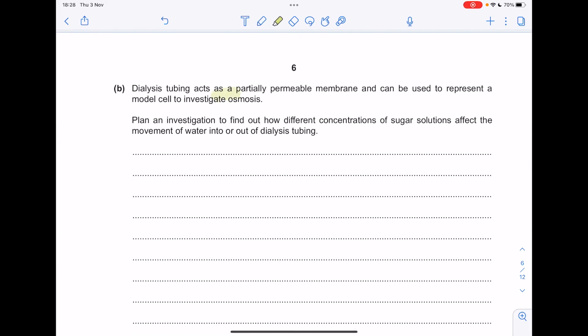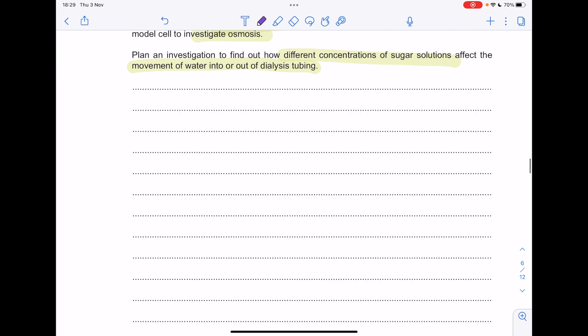Dialysis tubing acts as a partially permeable membrane and can be used to represent a model cell to investigate osmosis. Plan an investigation to find out how different concentrations of sugar solutions affect the movement of water into or out of dialysis tubing. So what is our independent variable going to be? What are we changing? It's the concentrations of sugar solution. Let's give a range, e.g., zero molar.